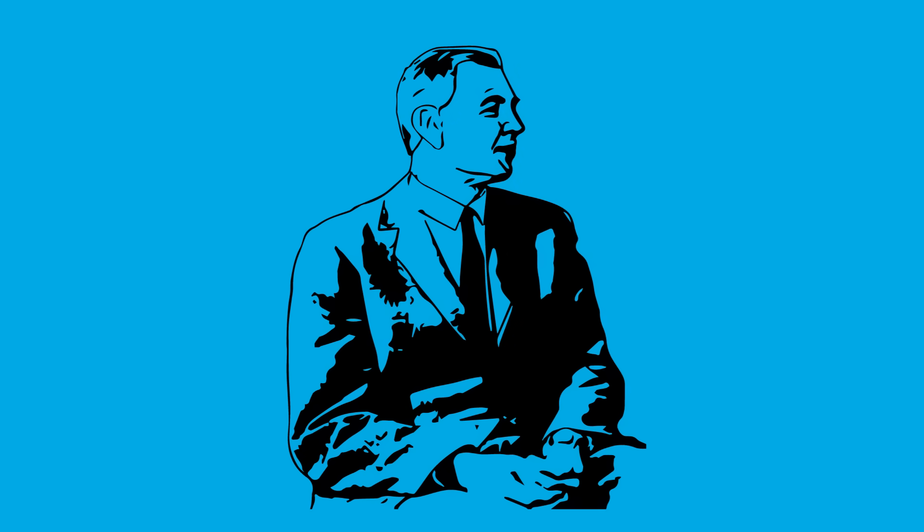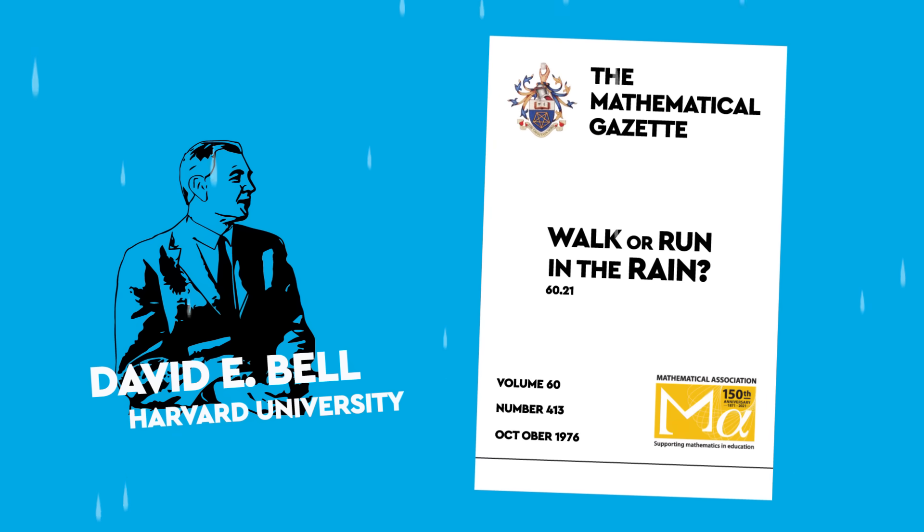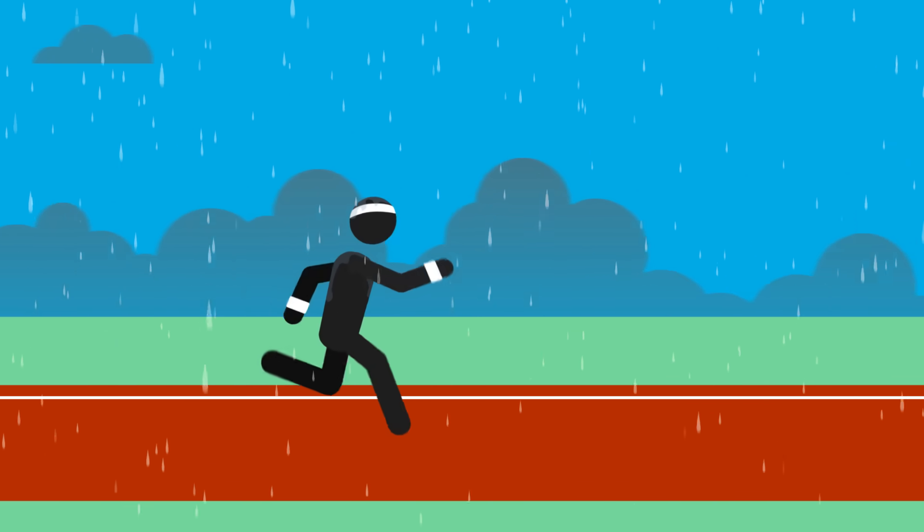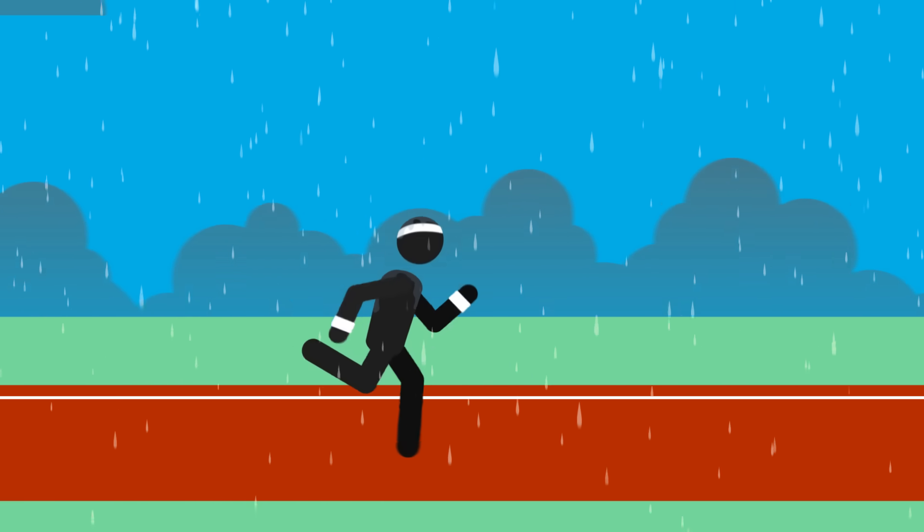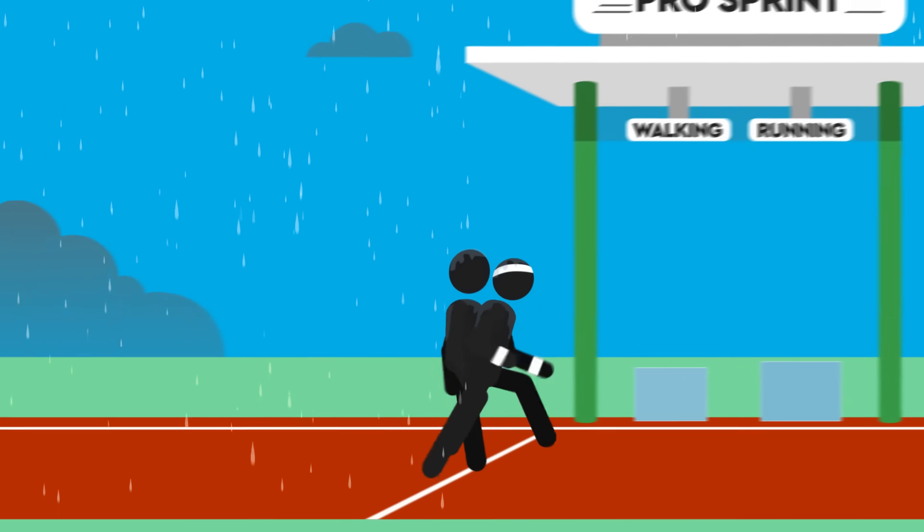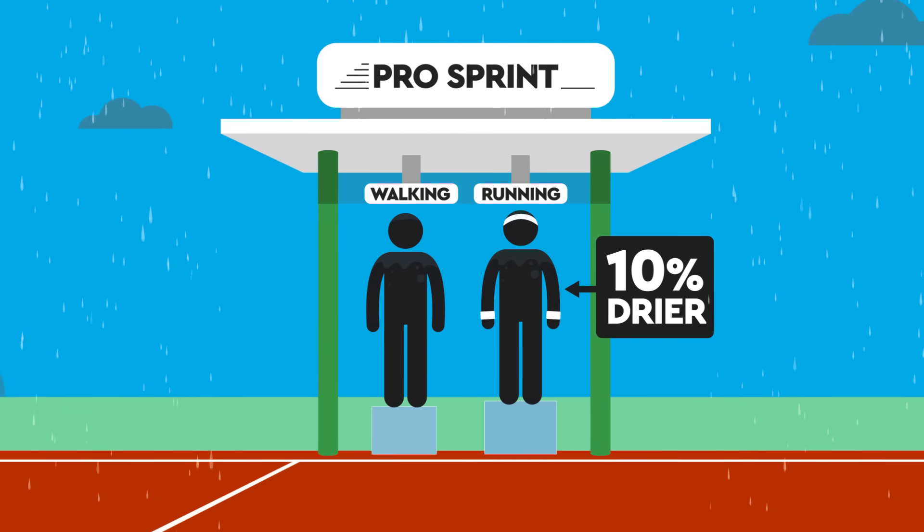Firstly, we have Harvard mathematician David E. Bell, who published a paper back in 1976 and found that even if you're running at a speed comparable to that of a professional sprinter, which, let's face it, you probably aren't, you'll only get about 10% less wet.